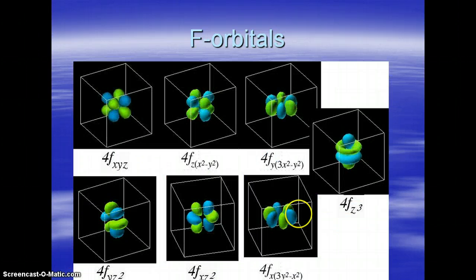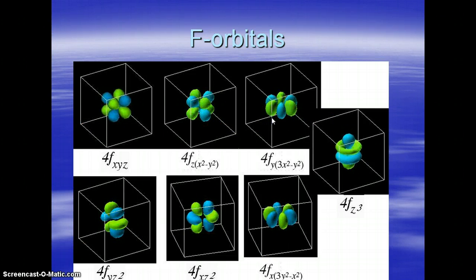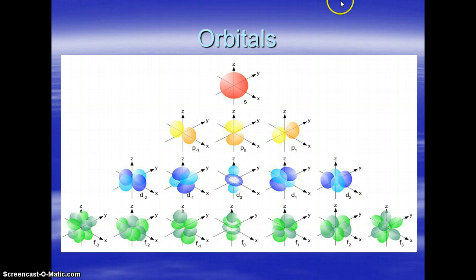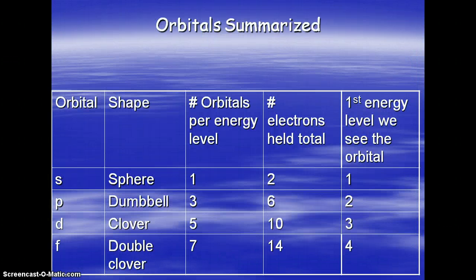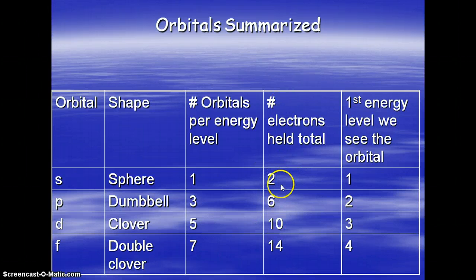The last orbital is the F orbital. There are seven F orbitals with even more peculiar shapes — too complex to put together easily. Each holds two electrons, so that's a total of 14 electrons that the F orbitals can hold. Altogether, you have the 1 S orbital, the three P orbitals, the five D orbitals, and the seven F orbitals, holding 2, 6, 10, and 14 electrons respectively.